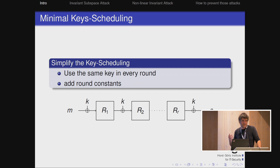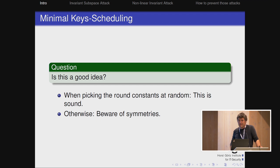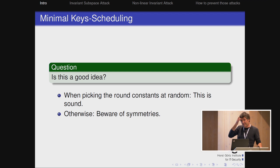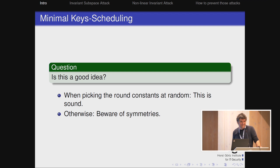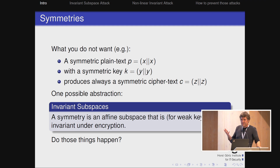If all these ciphers had a bit more of a key schedule, none of these results would ever happen. So that's one of the things where this minimizing is nice — we see things we didn't see before. Is it a good idea to have round keys identical up to a constant? You have to be careful; that's basically what all this work is about. You have to be careful how you choose the constants. Often they are chosen in a very ad hoc way. The last thing you do is think, okay, we need some round constants — and at the last minute you write down round constants that are efficient to implement. And sometimes this is not a good idea.